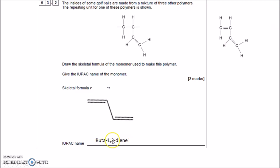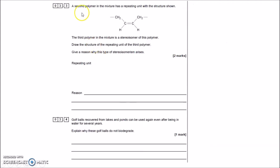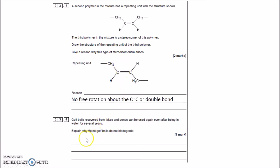The second polymer has a repeating unit shown. The third polymer is a stereoisomer — same structural formula but different arrangement of atoms in space. Using Cahn-Ingold-Prelog priority: the CH₂ group takes priority over H on both carbons of the double bond, making the shown structure the Z isomer. The E isomer must be drawn with the priority groups on opposite sides. This type of stereoisomerism arises because there is no free rotation around the double bond.